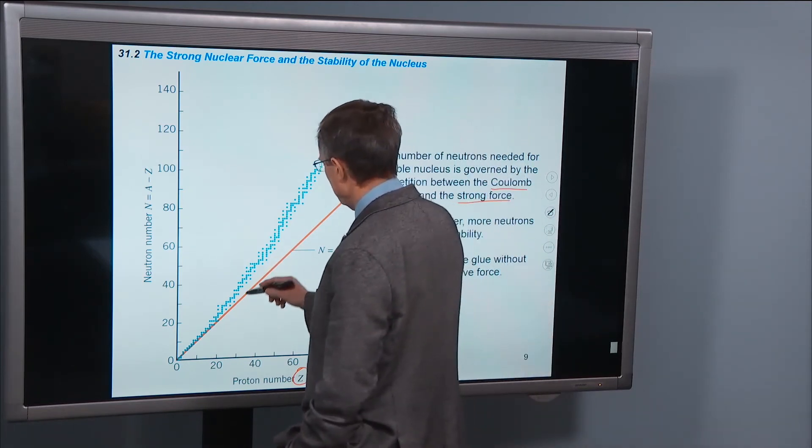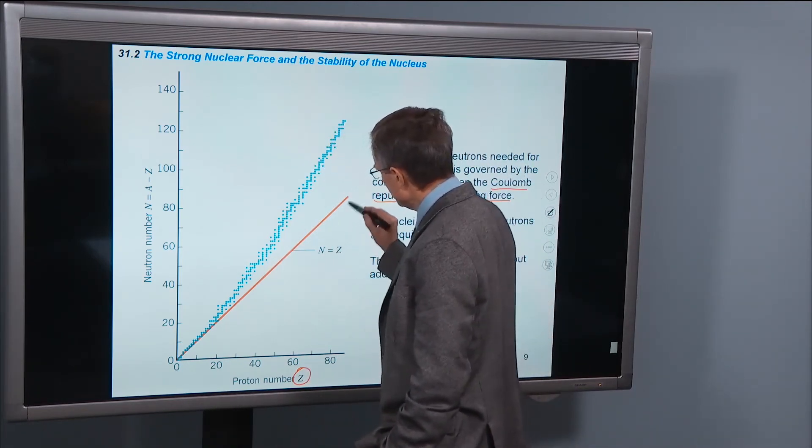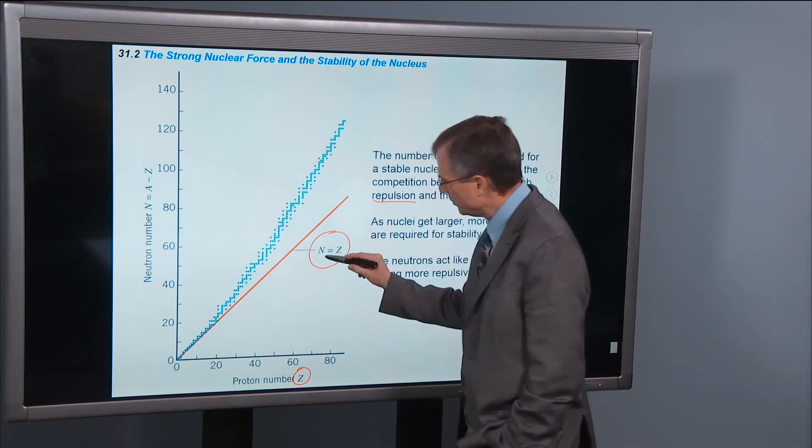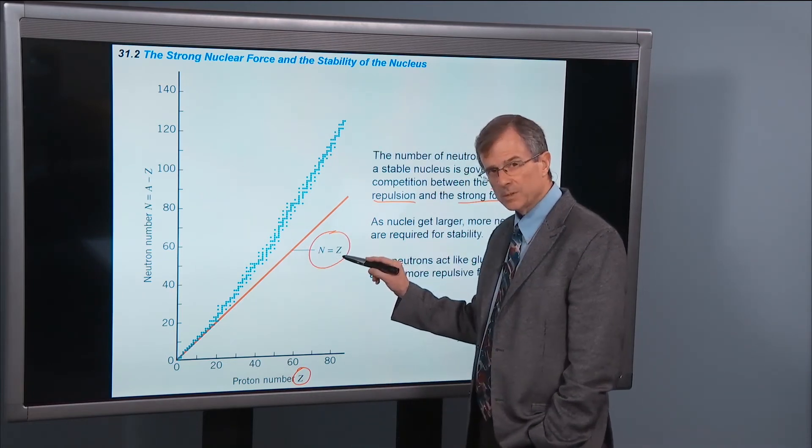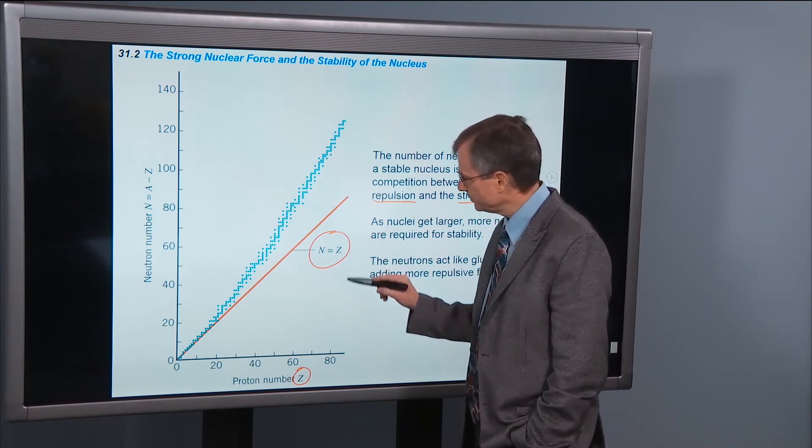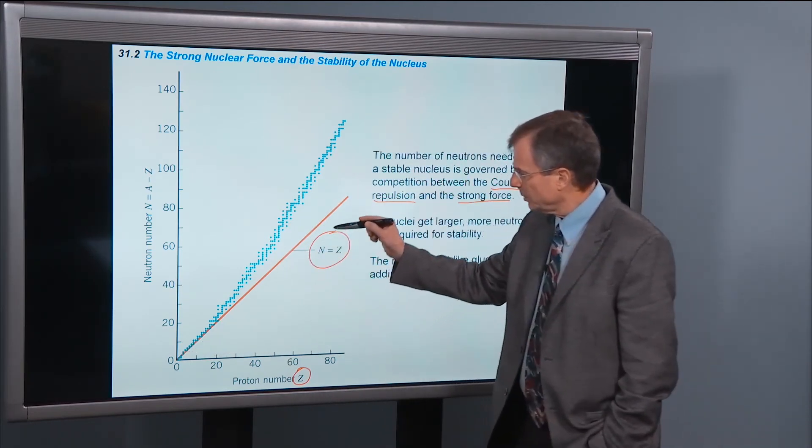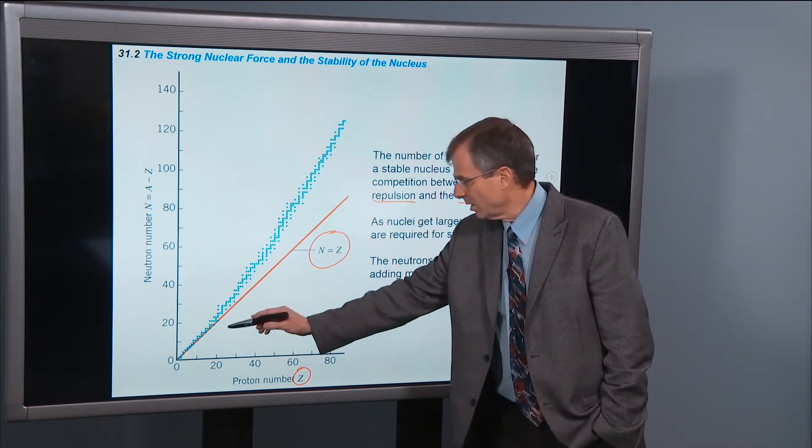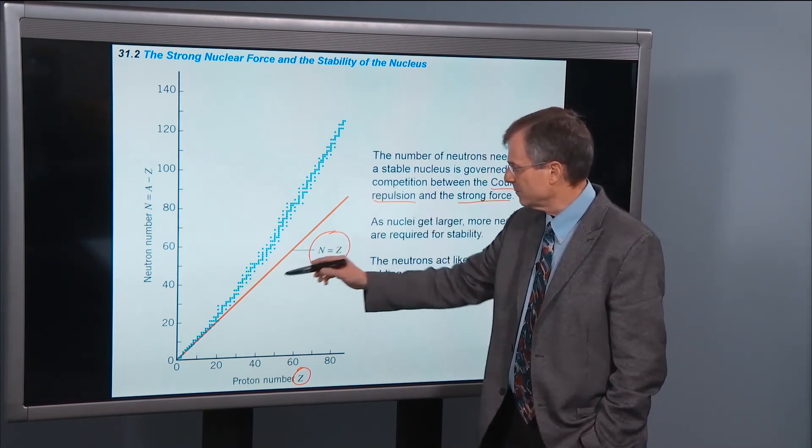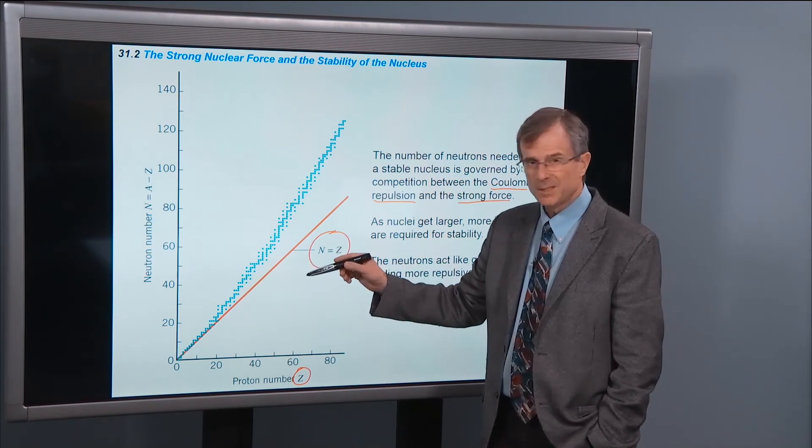And that's what you see here. This red line is where the number of neutrons equals the number of protons. If the number of neutrons equaled the number of protons in a nucleus, then all these points for all these atoms would lie along this line, but they don't.